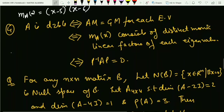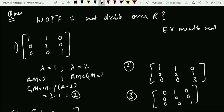So, the conclusions are: if A is diagonalizable, then AM equals GM for every eigenvalue; the minimal polynomial consists of distinct monic linear factors of each eigenvalue; and there exists a non-singular P such that P⁻¹AP equals D.